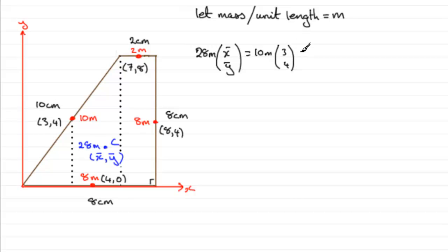And then we've got to add it to the moments of, say, this 2M mass here, 2M at 7, 8. And then this 8M mass at 8, 4. 8M at 8, 4. And finally, we've got this mass, 8M at 4, 0. 8M at 4, 0.